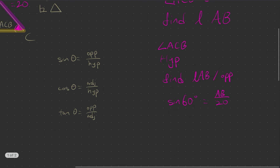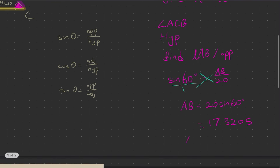So how do I find AB? We just cross multiply — bring the 20 over, so AB equals to 20 times sine 60 degrees. If we work this out, we get 17.3205. So AB equals to 17.3 cm, rounded off to 3 significant figures.